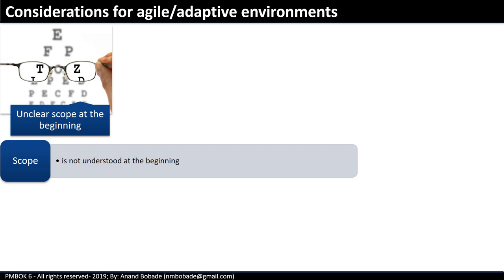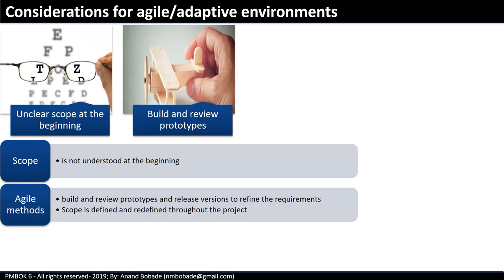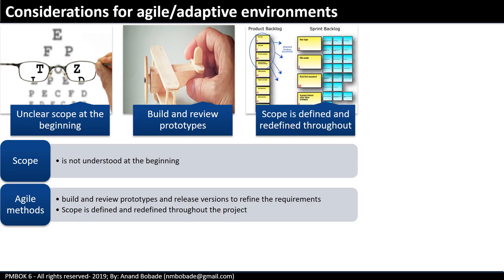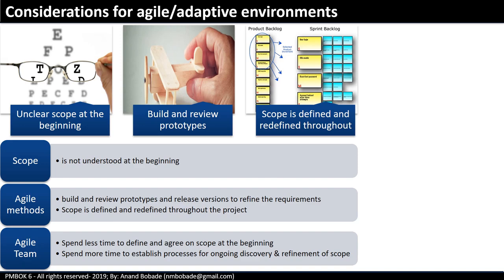Regarding considerations for agile and adaptive environments: agile projects will mostly have unclear scope at the beginning. Sometimes the business doesn't know the product requirements — they might say 'we want to develop the best TV in the market,' but what does that mean exactly? The project team may build a prototype to develop product understanding. Agile cycles, referred to as sprints, are executed to refine the product until it meets the customer's requirements. Scope is defined and redefined throughout the project lifecycle. Agile teams spend less time defining and agreeing on scope at the beginning, but spend a lot more time on it as an ongoing activity as part of discovery and refinement during each sprint or iteration.